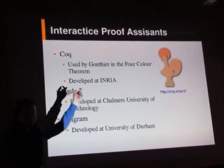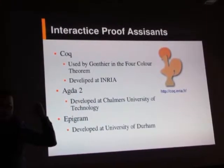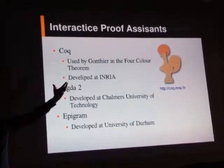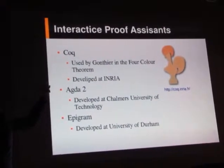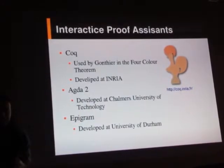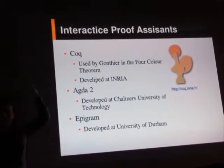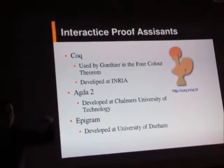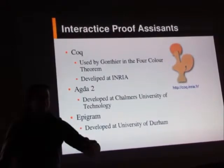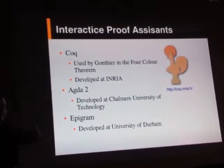George Gonthier and Benjamin Werner implemented the proof in dependent type theory and used the Poincaré principle that we saw, where you can use computation. You just implement the computation in the proof and it returns true. They then write a predicate using a bunch of logic to say that if this program returns true, then the four-color theorem is true.